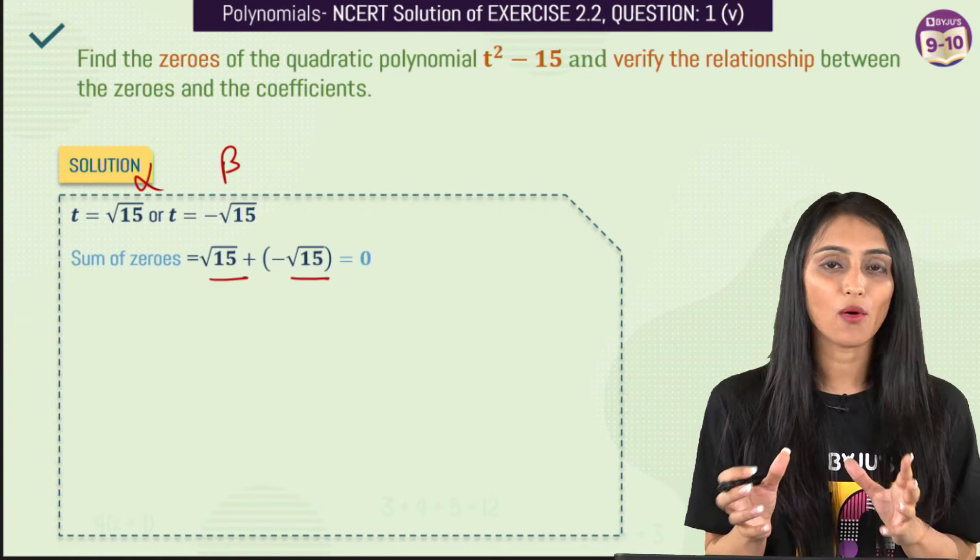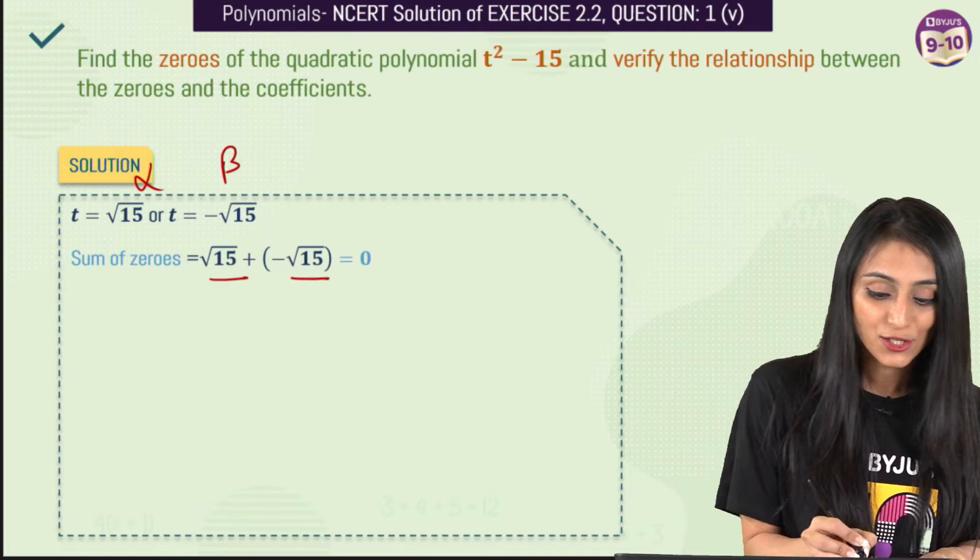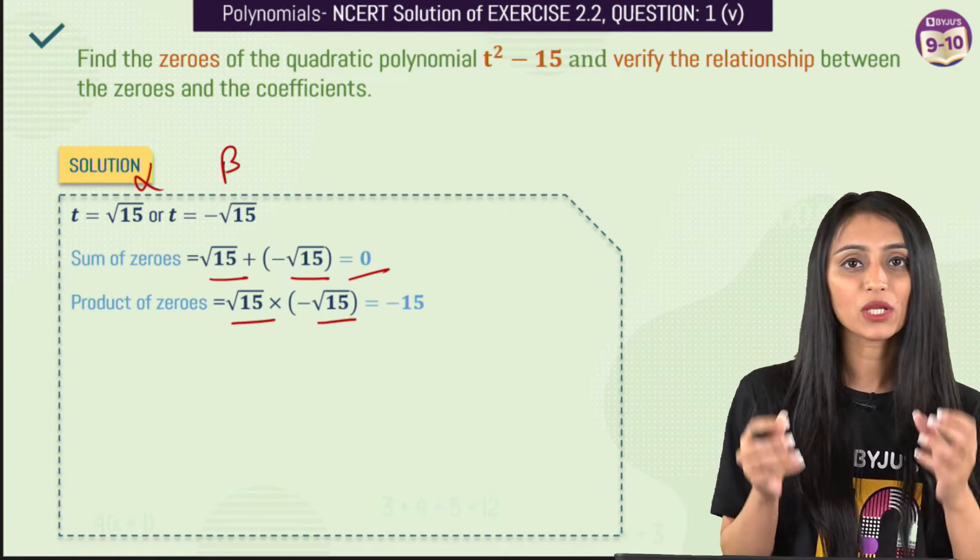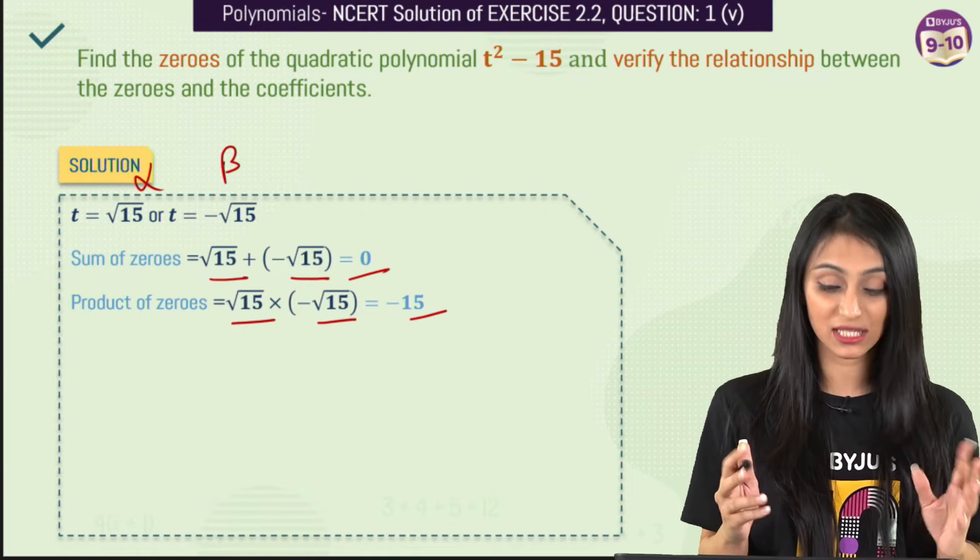Once I add them up, the values are the same but opposite in sign, so that's going to be zero. Sum of zeros is zero. For the product of zeros, we simply multiply them. √15 × √15 gives us 15, and with the negative sign, it's -15.